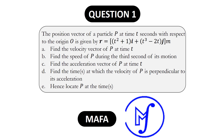In this video we are going to be solving just question one, which has been displayed already. The question reads: the position vector of a particle P at time t seconds with respect to the origin is given by r. Part a: find the velocity vector of particle P at time t. Part b: find the speed of P during the third second of its motion. Part c: find the acceleration vector of P at time t. Part d: find the time or times at which the velocity of particle P is perpendicular to its acceleration. And finally, locate particle P at those times.